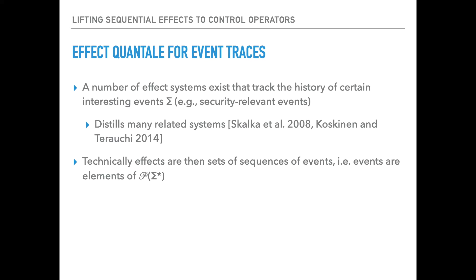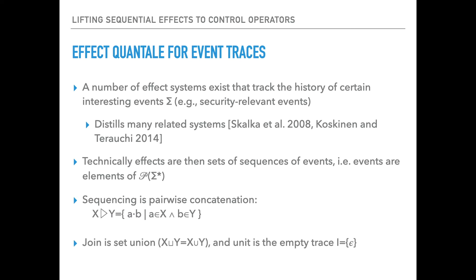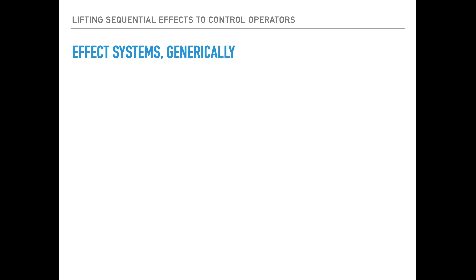To make this into a real effect system, we need to define two operators. We need to define sequencing, which here is just pairwise concatenation. So if you run something with effect x and then something with effect y, the result is going to be the set of traces composed of some trace from x followed by some trace from y. Least upper bound is just going to be set union, and there ends up being a nice unit for sequential composition, which is the singleton set containing the empty trace. And if you take this and you run it through the prior work, you also get out a derived iteration construct. We are not limited to just things like regular expressions — this is not restricted to regular languages. It can go well beyond that.